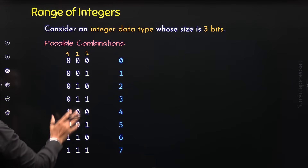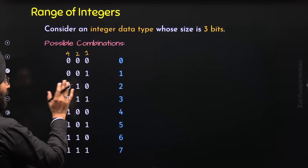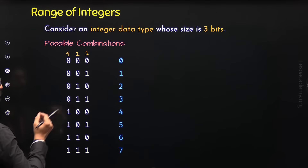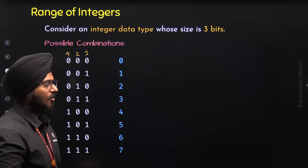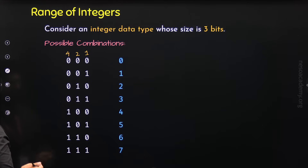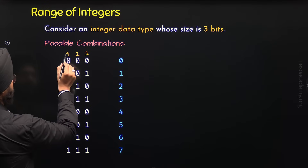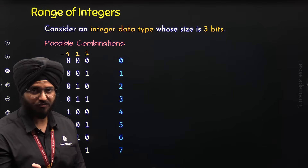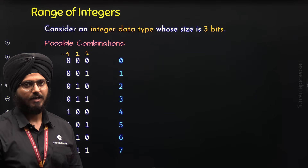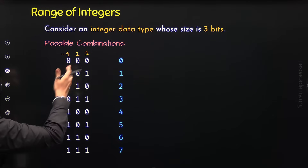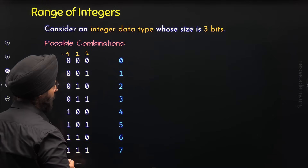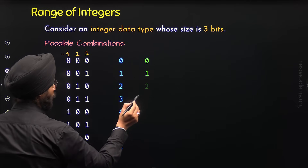Now let's assume that these binary numbers are representing both positive and negative values. If that's the case, then the first bit must represent the sign bit, where 0 represents a positive number and 1 represents a negative number. Also, the positional weight of the sign bit must be minus 4. For the four binary numbers starting with 0, we get the same integer equivalents: 0, 1, 2, 3.